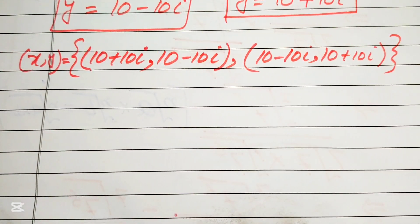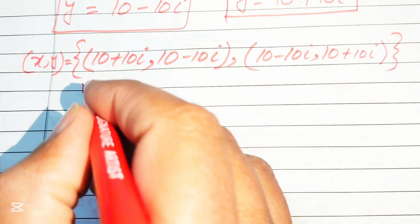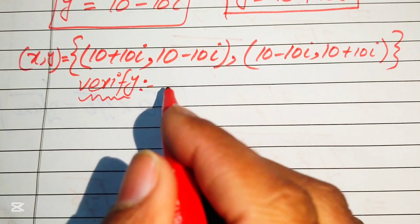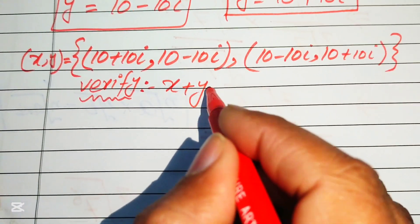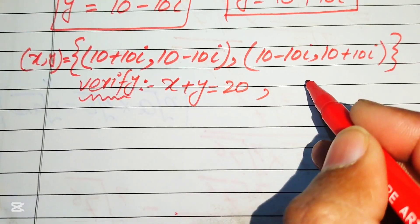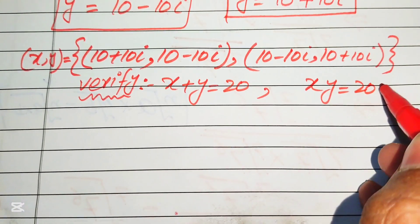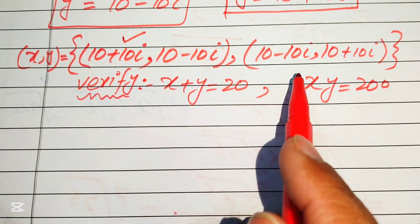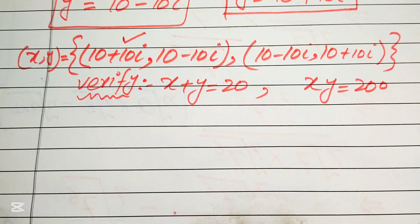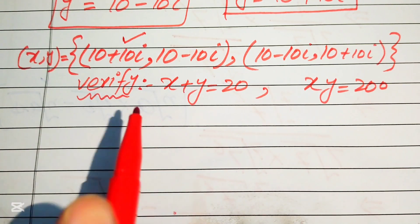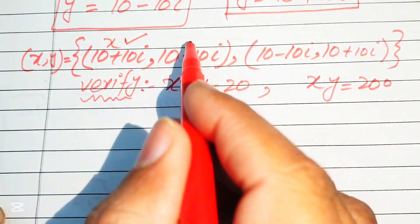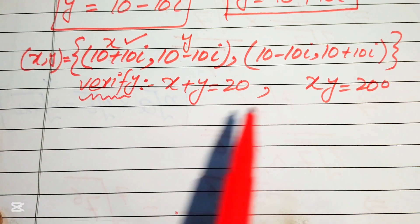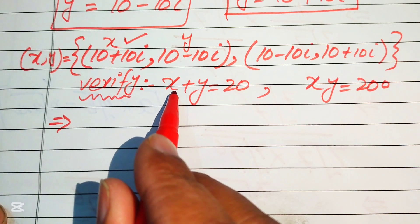Now in the next step we verify these two solutions. We copy down the given equations: the first equation is x plus y equals to 20, and the second equation is x times y equals to 200. We will verify the first solution, and leave verification of the second solution as an exercise for you.